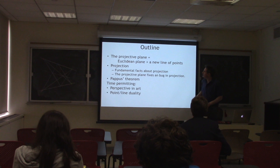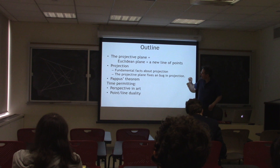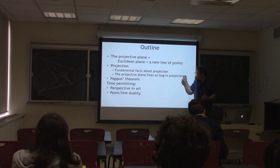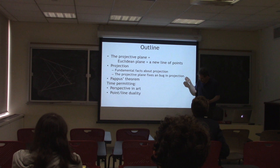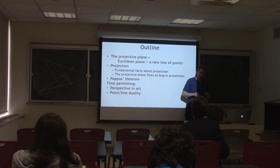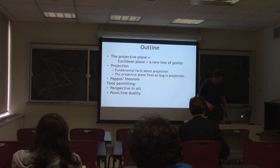Projective geometry has its origins in the late 17th century, and it really became very popular in the 19th and early 20th century. Now it's somewhat less in vogue, but I like it a lot. So here's the roadmap: first I'll define the projective plane, which is the ordinary Euclidean plane with one new line of points added. Second, I'll talk about projecting from one plane to another — between ordinary planes, and then between two projective planes. Then we'll prove Pappus' theorem, talk about perspective in art, and finally about point-line duality.